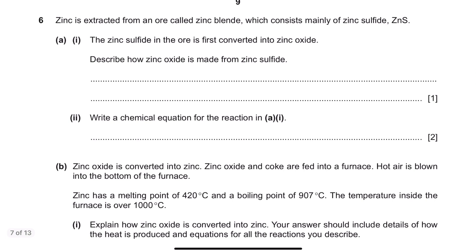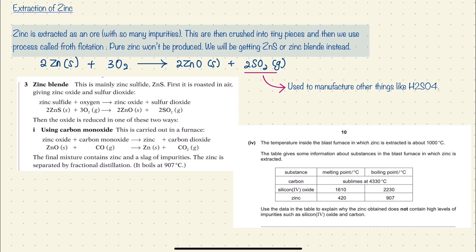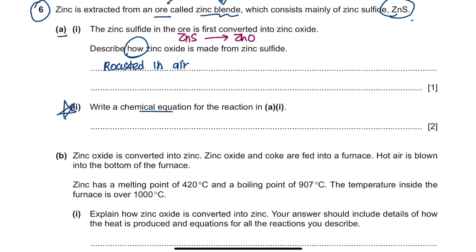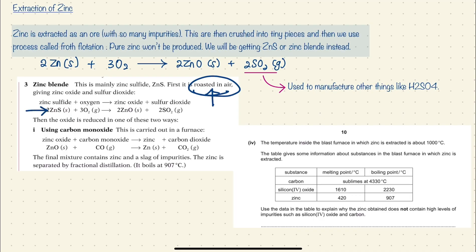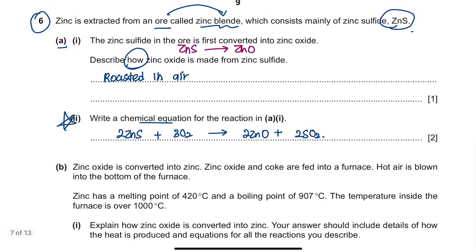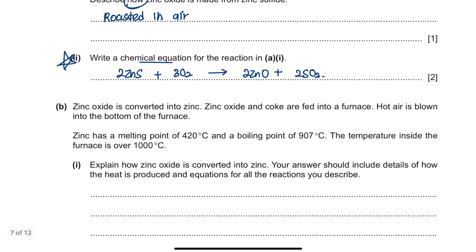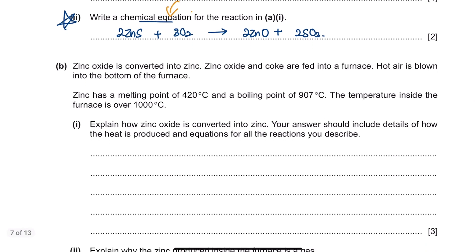This is another question about zinc extraction from May/June 2016, Question 6. Zinc is extracted from zinc blende, consisting mainly of zinc sulfide. Part A: zinc sulfide is first converted into zinc oxide. To describe how, you explain it is roasted in air. Part A2 asks for the chemical equation for this reaction. It is important to remember the pattern: for zinc or iron extraction, the question pattern is always the same — memorize the chemical equation for each reaction.